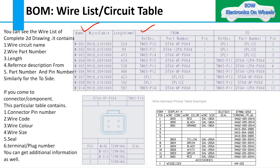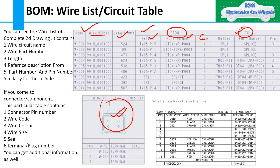The wire list contains: wire circuit name, wire part number, length, reference description (from and to), part number and pin number, and similarly for the destination side. From this table you will get the information needed to create the bill of material. If you come to the connector or component table, it contains the following information which will also help you build the BOM: connector pin number, wire code, wire color, wire size, seal, and terminal or plug number. You can get additional information as well.